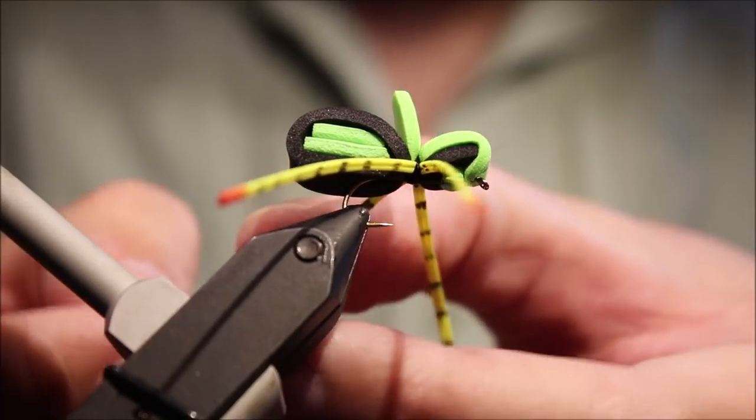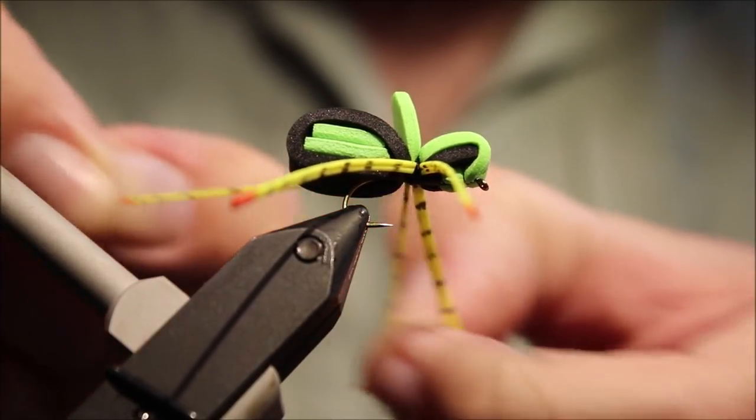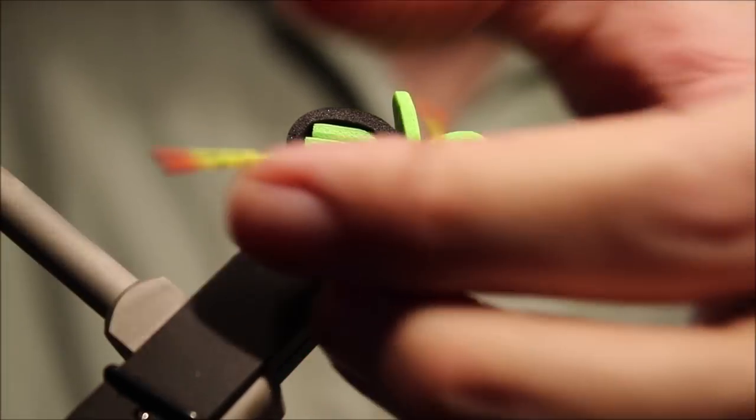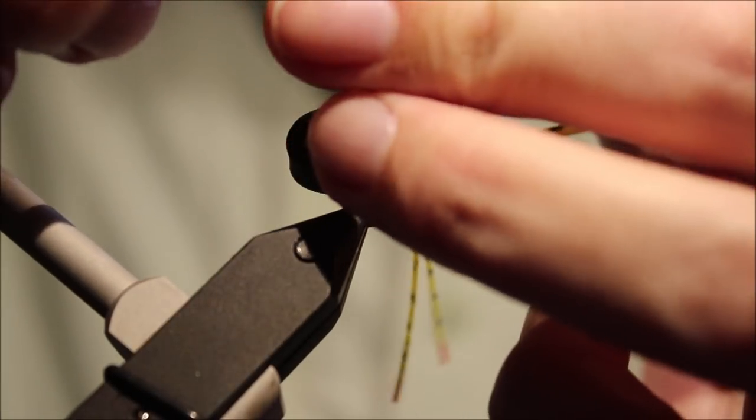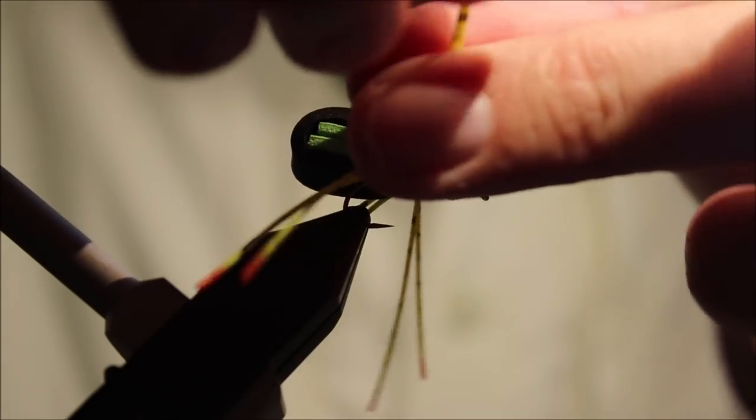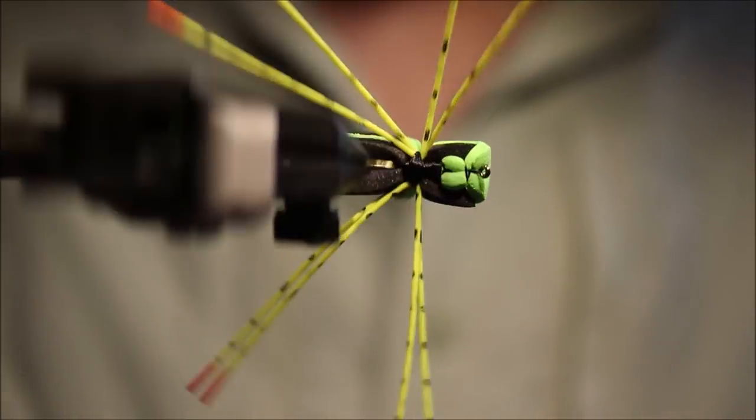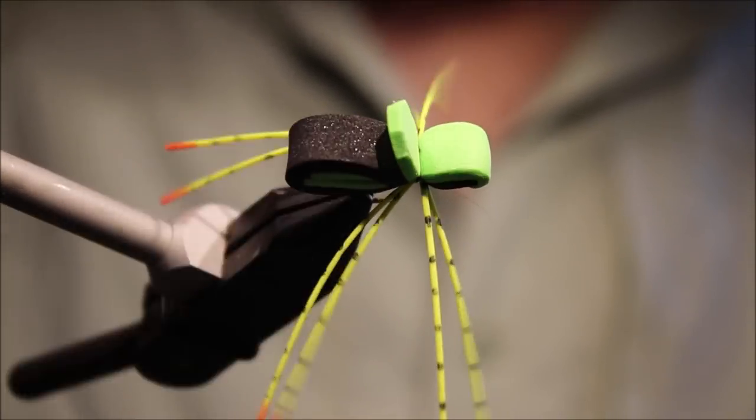The last thing is just to separate these legs and just grab one, stretch it. Just give them a stretch. There you have it, the Tokyo Spider. Big leggy bug thing.